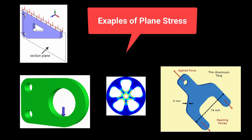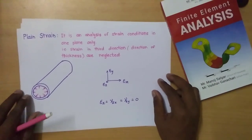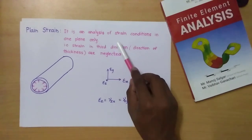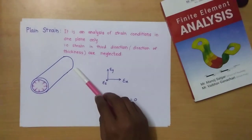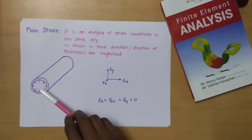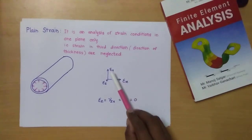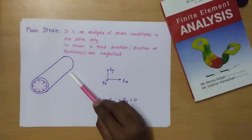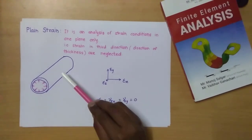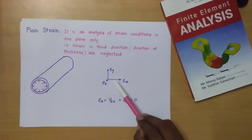Now we will see what is meant by plane strain condition. Similarly, plane strain is an analysis of strain conditions in one plane only. For example, consider a long cylinder having internal pressure. The strains in this 3D body are epsilon X, epsilon Y, and epsilon Z. The strains coming in the Z direction are very, very small compared to those in X and Y. So the deformation in the Z direction is very small as compared to X and Y.